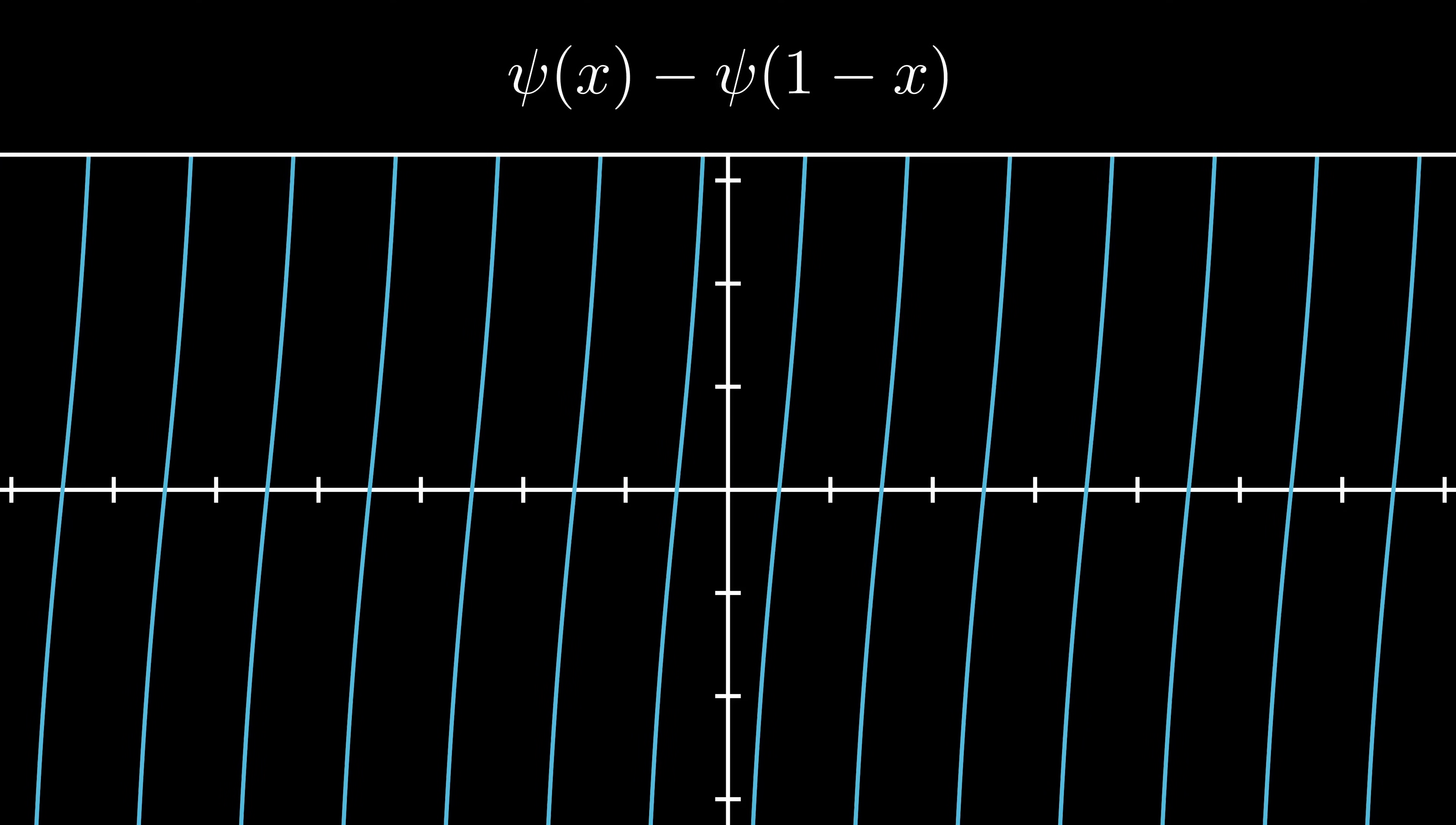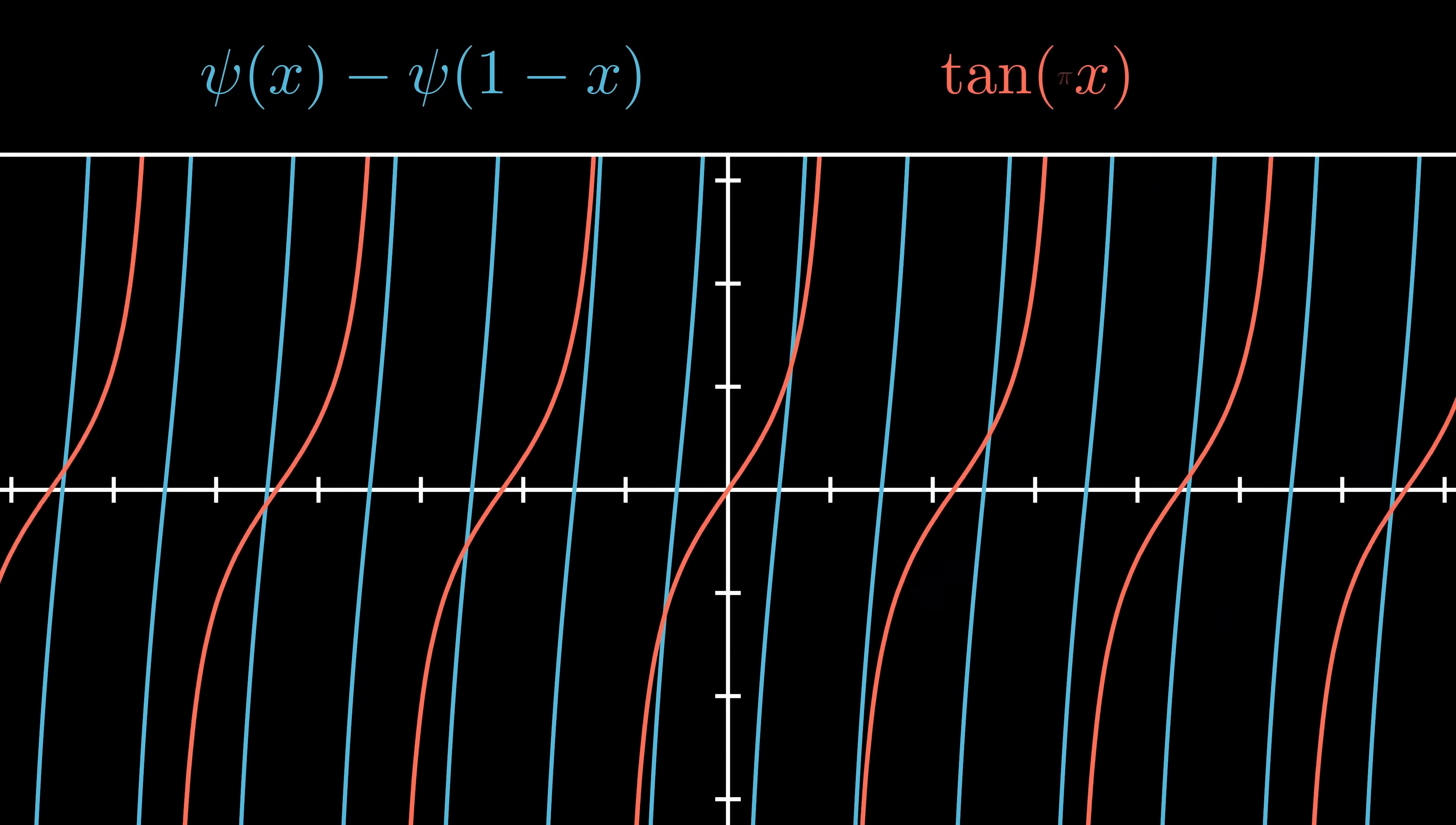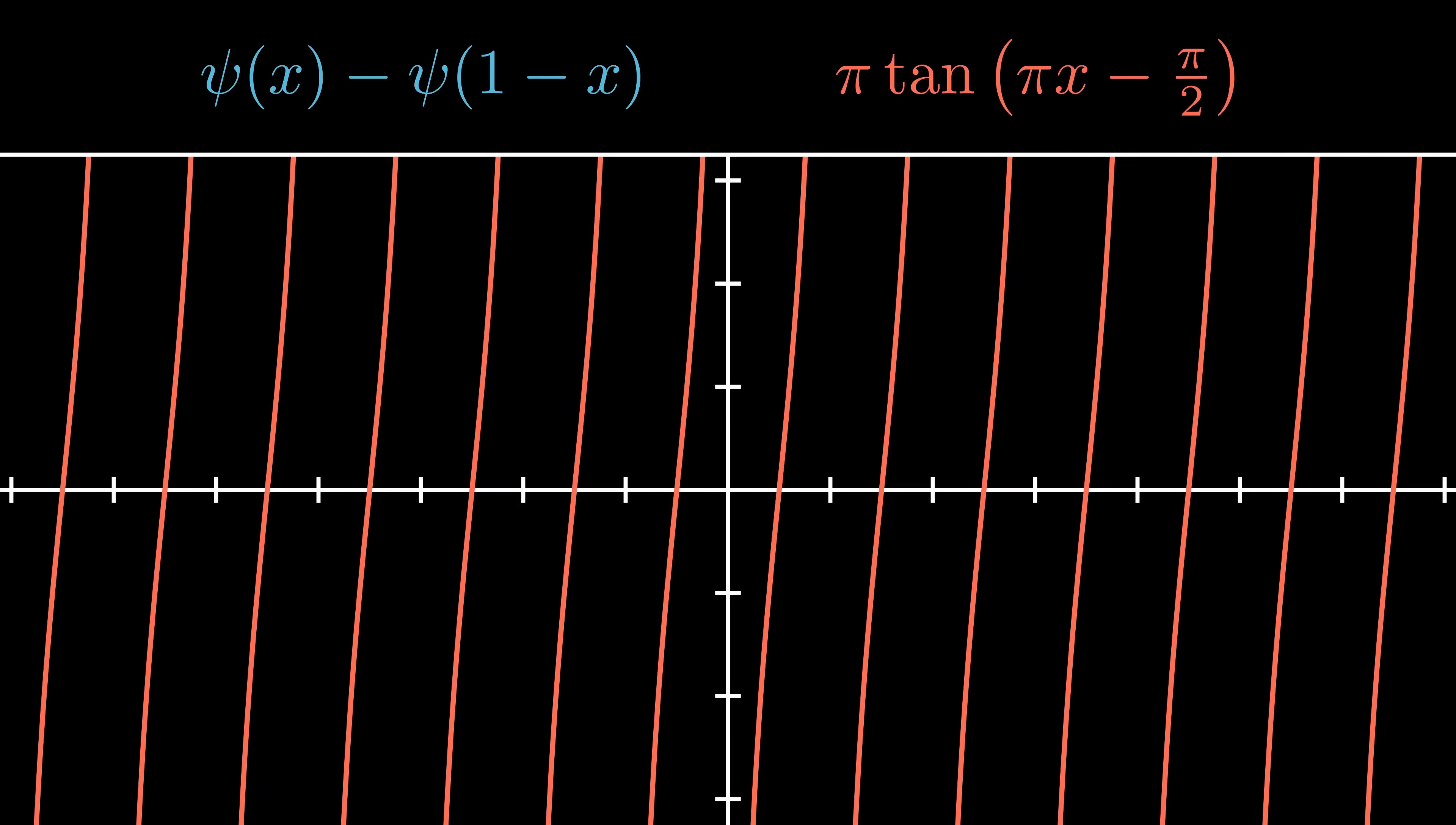Now, let's see how close this graph is to tangent. We'll superimpose the graph of tangent of x, squish it horizontally by a factor of pi so it has the right period, and shift it over by one-half so the asymptotes line up. And as a final touch, if we scale it vertically by a factor of pi, we really do seem to get a perfect match.